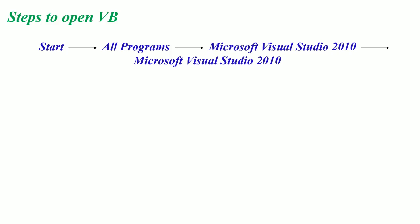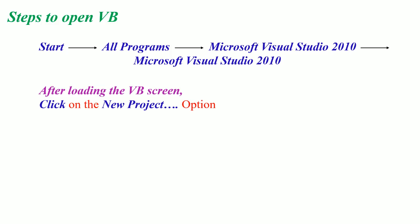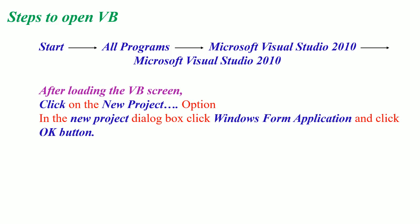Next, steps to open VB. Go to Start, All Programs, Microsoft Visual Studio, and select Microsoft Visual Studio 2010. After loading the VB screen, click on the New Project option. In the New Project dialog box, select the Windows Form Application option and then click the OK button.